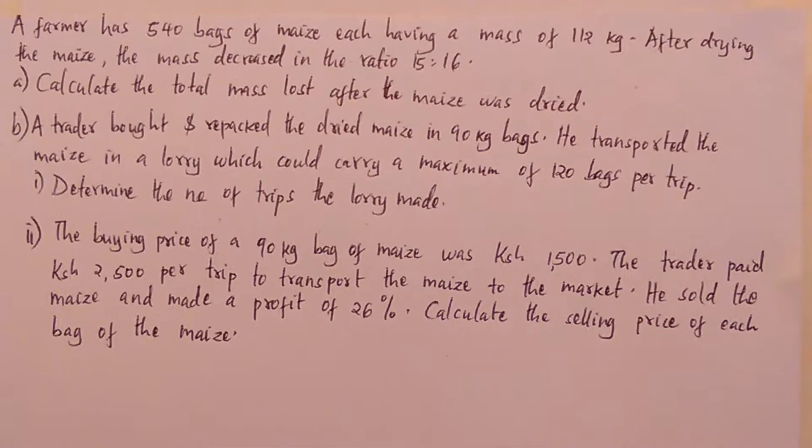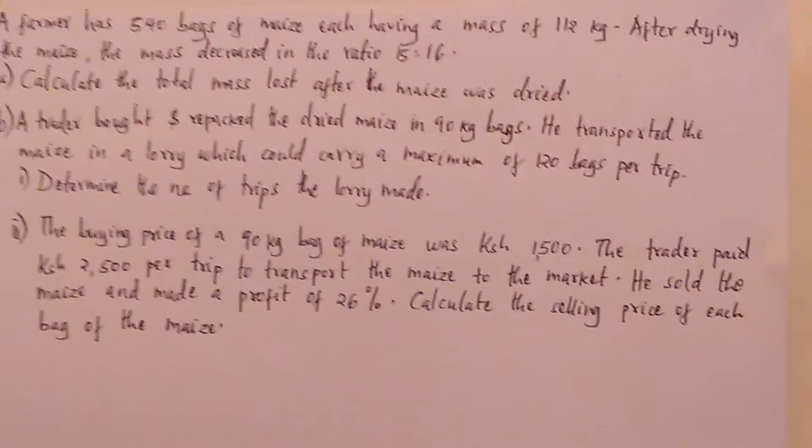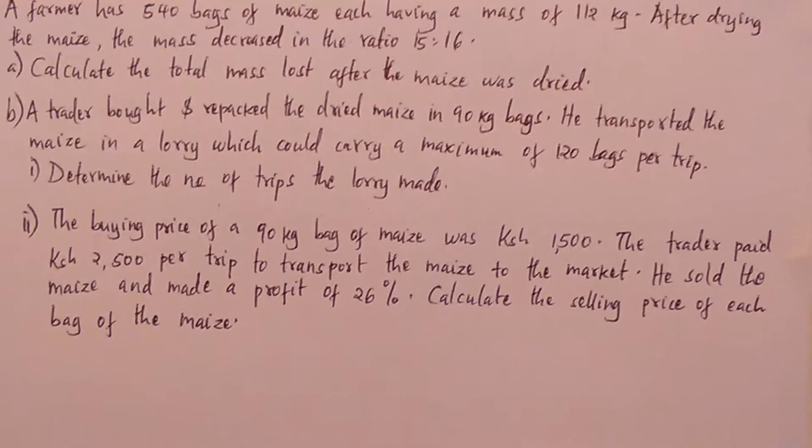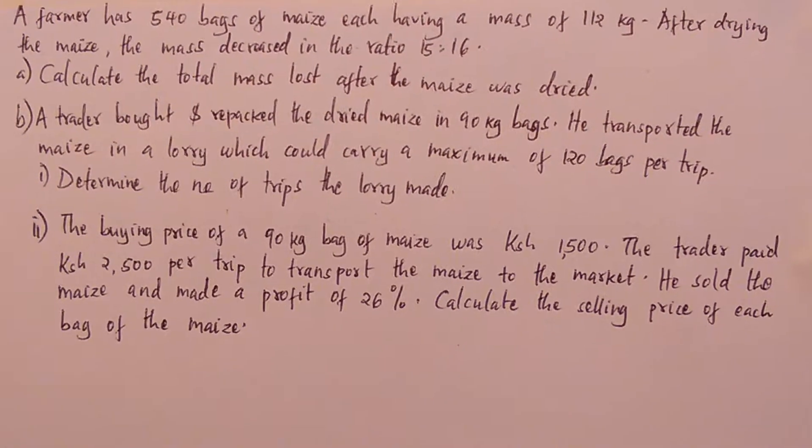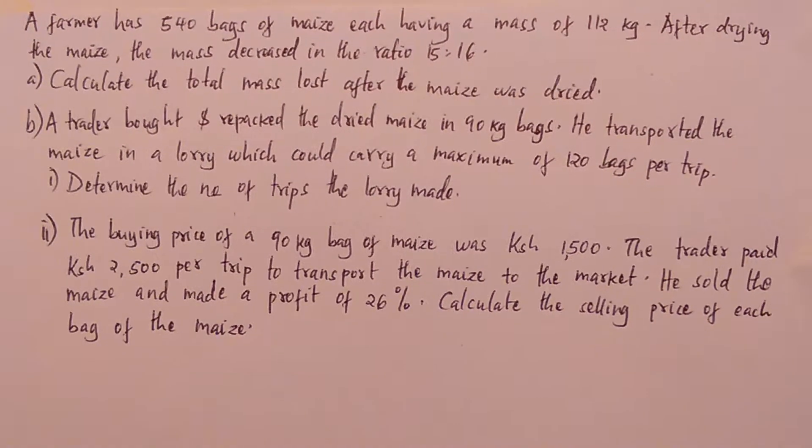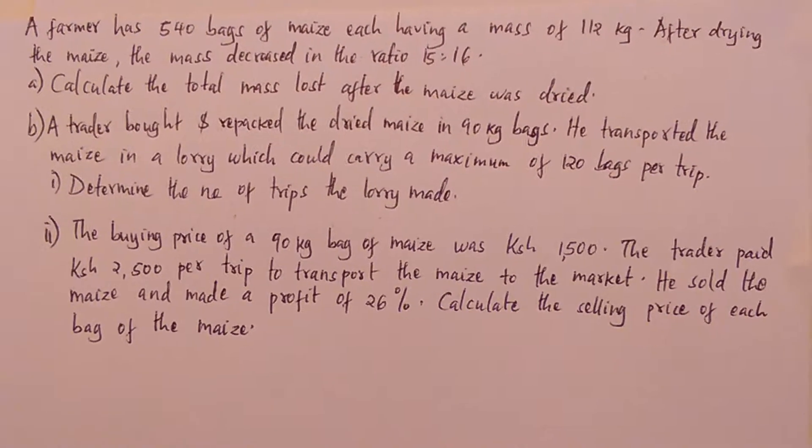A farmer has 540 bags of maize, each having a mass of 112 kilograms. After drying the maize, the mass decreased in the ratio 15:16. Part A: Calculate the total mass lost after the maize was dried.